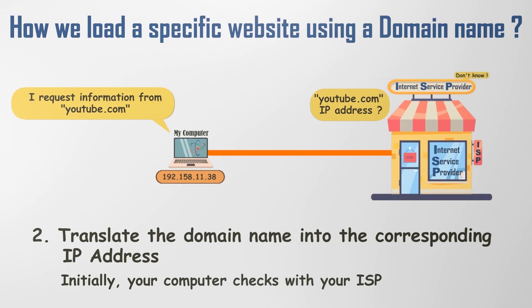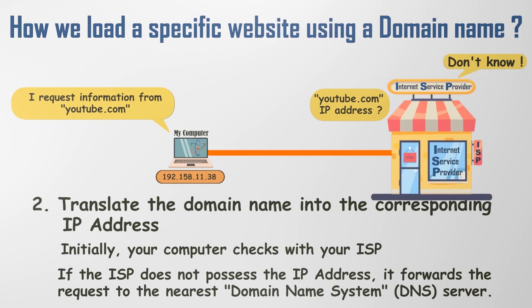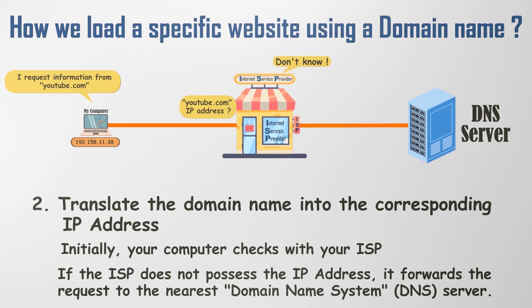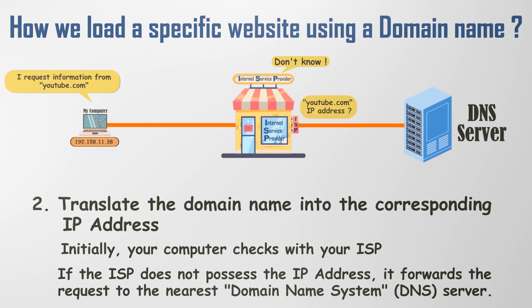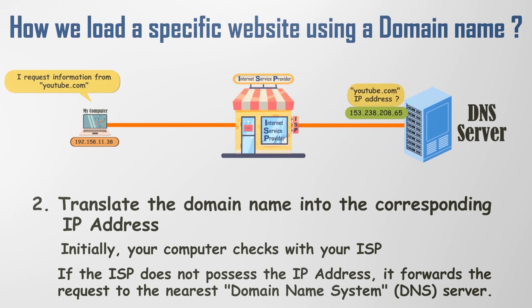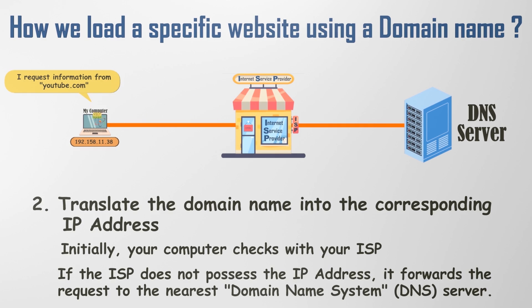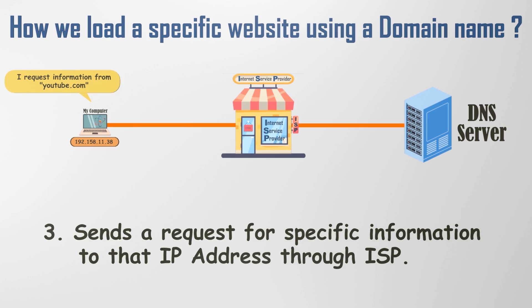If the ISP doesn't possess the IP address, it forwards your request to the nearest domain name system server — a DNS server — a specialized type of server. A DNS server retains a mapping of all domains to IP addresses. It locates the correct IP address and transmits it back to you through the ISP. Once your computer acquires the IP address, it sends a request for specific information to that IP address.